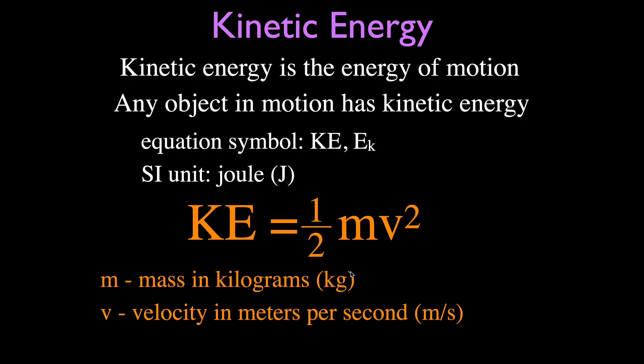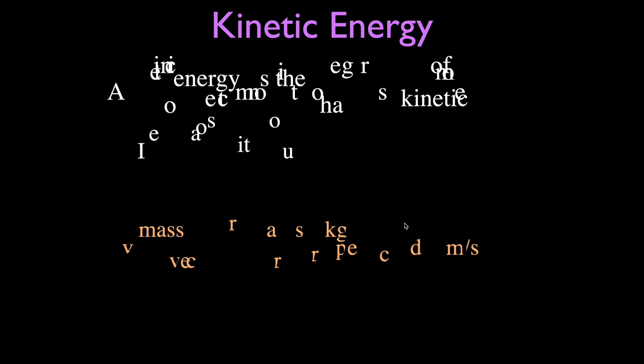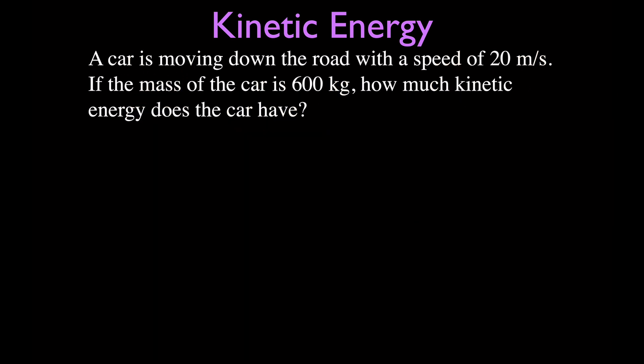And don't forget, the velocity needs to be in meters per second. V velocity, meters per second. One-half MV squared. You can see all objects, in order to have kinetic energy, they have to have some motion. Sometimes we say velocity, sometimes we say speed, but technically speaking, you're supposed to say velocity.